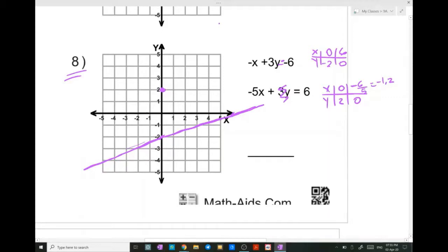So minus 1.2 for x and 2 for y, and there is the second line which is representing the second equation.